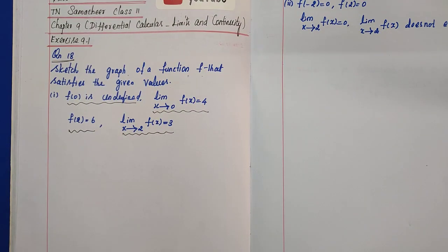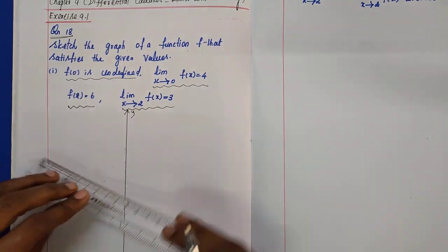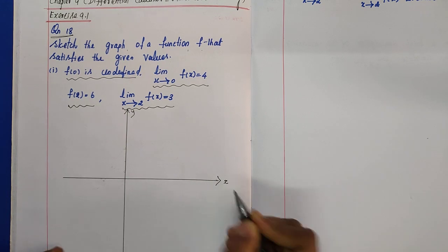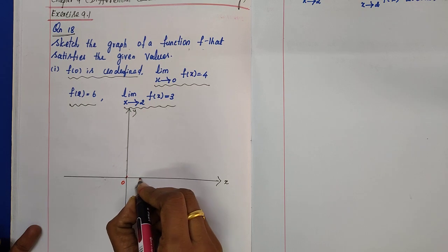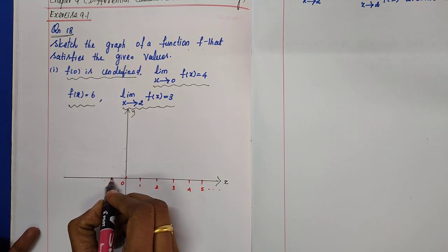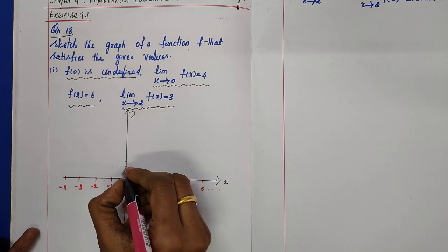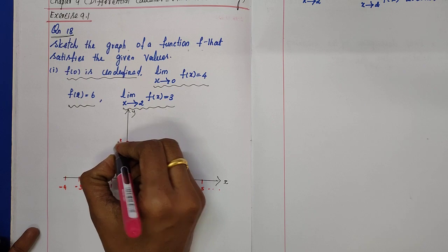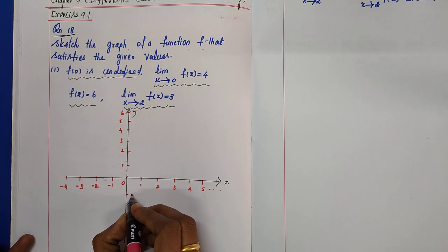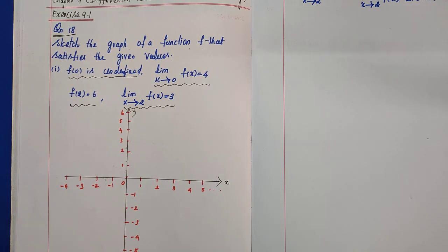First, let's set up the x-axis and y-axis. The origin is at 0. Going rightward: 1, 2, 3, 4, 5. Going leftward: minus 1, minus 2, minus 3, minus 4. On the y-axis going upward: 1, 2, 3, 4, 5, 6. Going downward: minus 1, minus 2, minus 3, minus 4, minus 5.